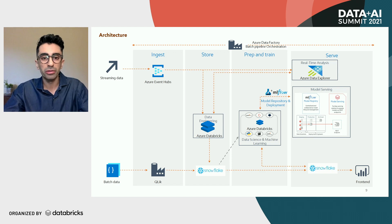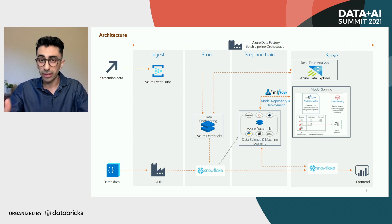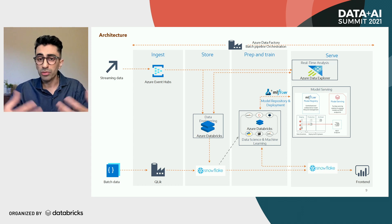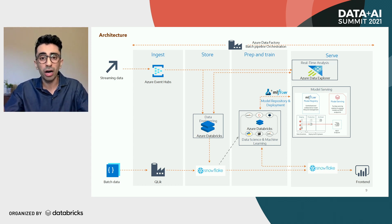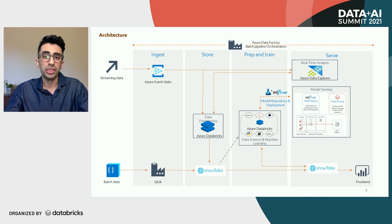Once the data has landed in Snowflake, we shift into model training or model serving mode. During model training, we first read the data from Snowflake using SQL, or if it's supervised learning, we load labeled data from Azure Blob Storage. We spin up a Spark cluster and train our model — for deep learning, we spin up a GPU cluster. We then use MLflow for model registry to compare different models and do experimentation.